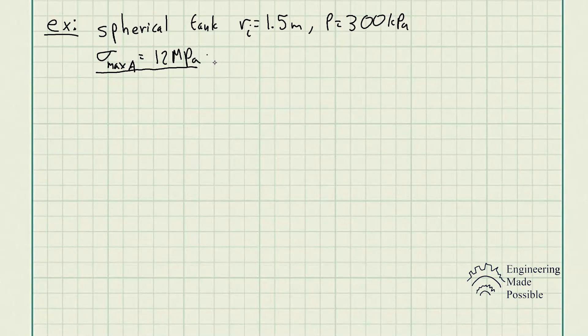As we've previously seen, the axial stress for a spherical tank is equivalent to the hoop stress as well. It's the exact same equation. We have the internal pressure of 300 kilopascals and the internal radius of 1.5 meters.